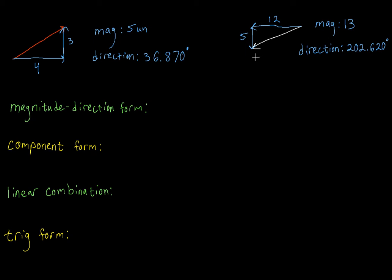For this white vector, I travel twelve units to the left and then five units down. Using the Pythagorean theorem, we figured out that the magnitude was 13. And then using a slightly modified version of arc tan, we were able to figure out the direction was 202.620 degrees. If you'd like a refresher on how we figured out that direction, because it does look a lot different, there's another video talking about the direction of vectors in any quadrant.